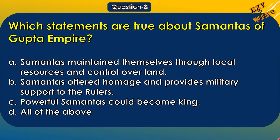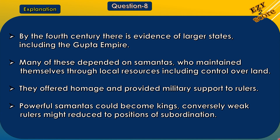Question 8: Which statements are true about Samantas of the Gupta Empire? A. Samantas maintained themselves through local resources and control over land. B. Samantas offered homage and provided military support to the rulers. C. Powerful Samantas could become kings. D. All of the above. The correct answer is option D, all of the above. By the 4th century, there is evidence of larger states including the Gupta Empire. Many depended on Samantas who maintained themselves through local resources including control over land, offered homage and provided military support to rulers. Powerful Samantas could become kings, while conversely weak rulers might be reduced to a position of subordination.